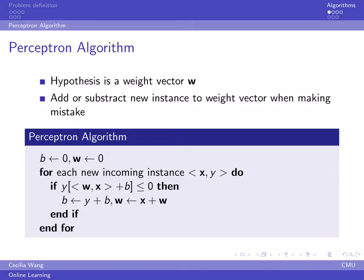We classify the new instance according to the inner product of the weight vector and new instance. If we make a mistake, we add or subtract the new instance from the weight vector.